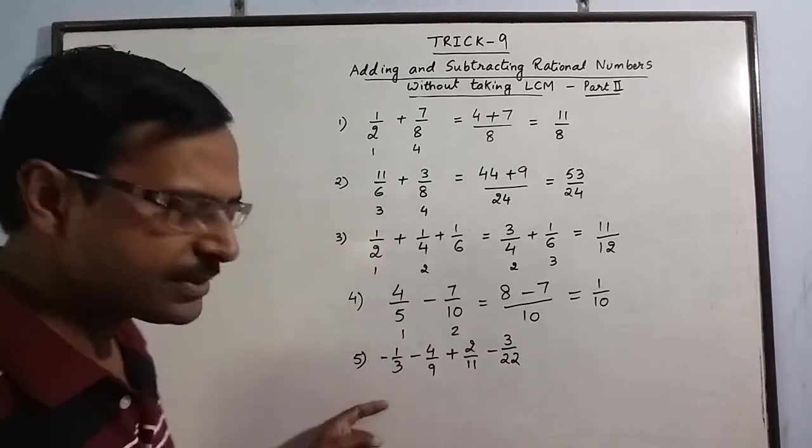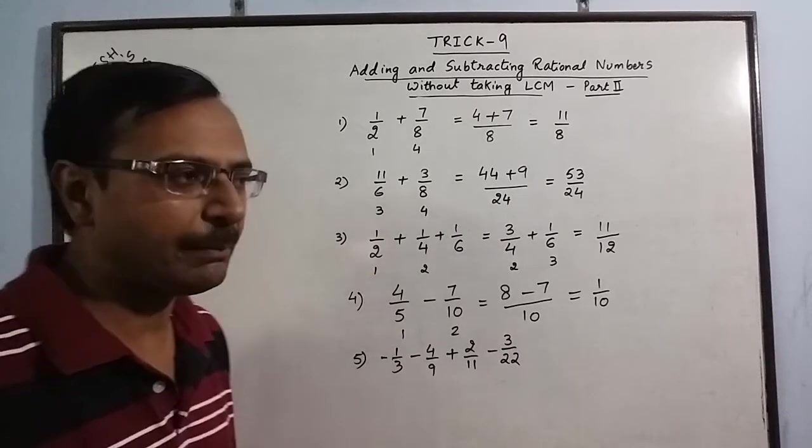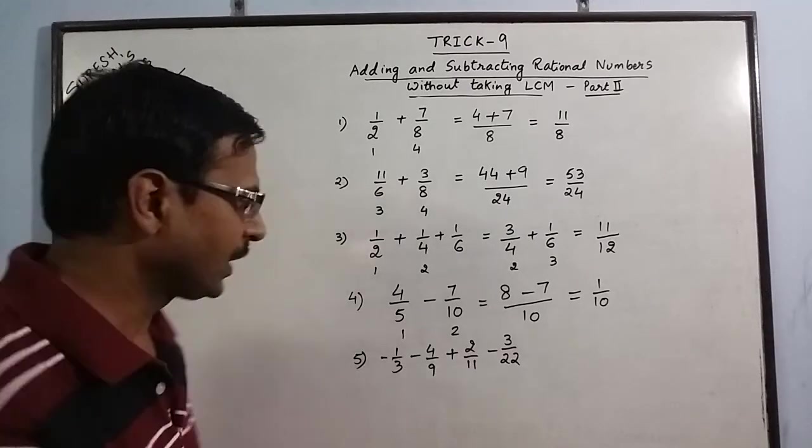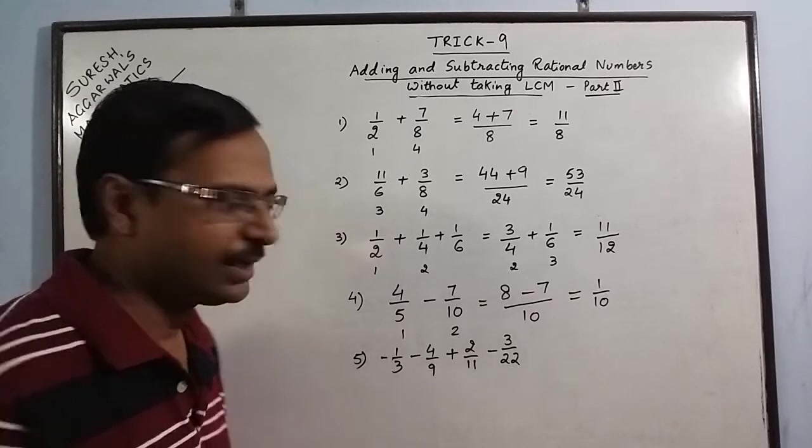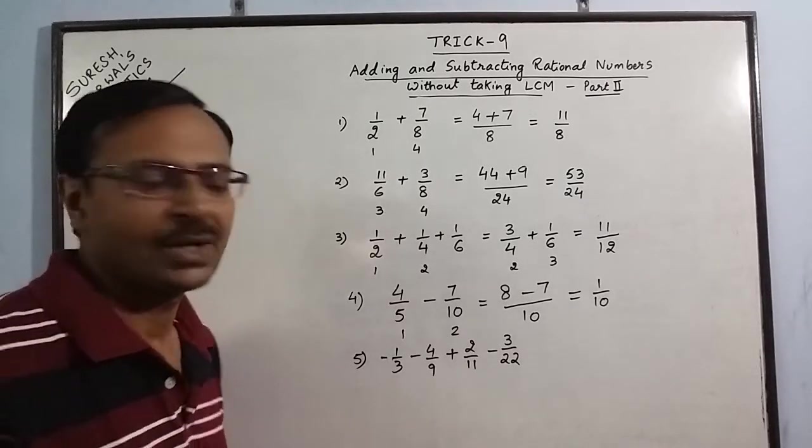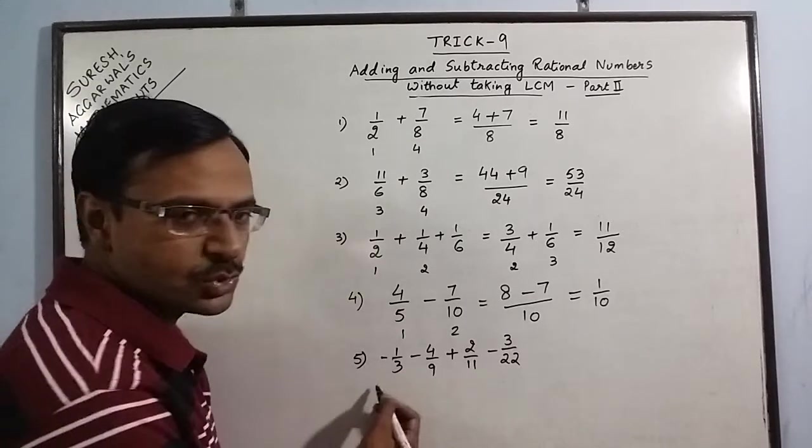Now if there are 4 numbers involving common factors, we combine those two rational numbers which have a common factor between them. Like 3 and 9 have a common factor of 3, and 11 and 22 have a common factor of 11. So I will solve these two first.